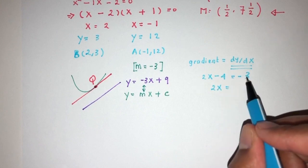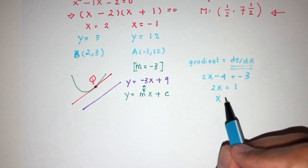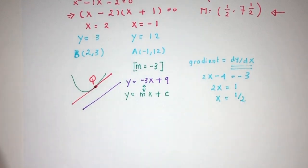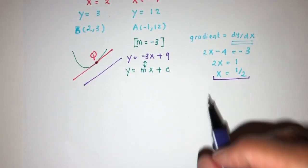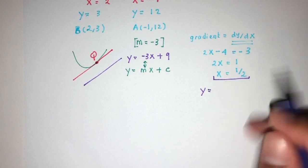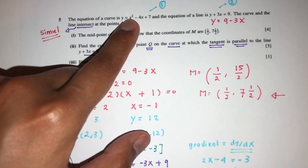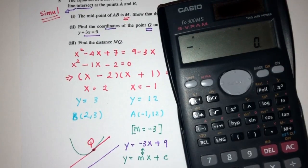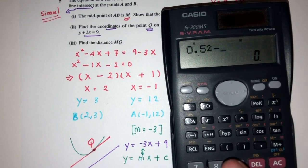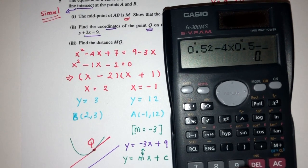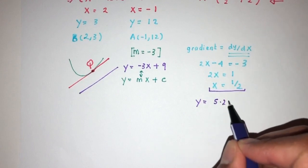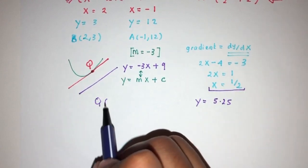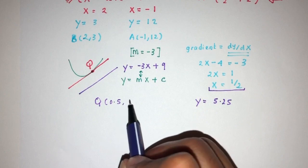Now 2x equals -3 plus 4 is 1, so x will be the value of 1/2. From this point on, we understand that to find y, we simply replace back in the main equation. That would be 0.5² minus 4 times 0.5 plus 7, which should be 5.25. So the point Q is (0.5, 5.25).